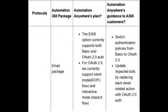Email Package: The EWS option currently supports both basic and OAuth 2.0 auth. Switch authentication policies from basic to OAuth 2.0. For OAuth 2.0, we currently support silent mode drop flow and interactive mode implicit flow. Update impacted bots by replacing each email-related action with OAuth 2.0 auth.